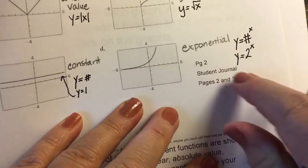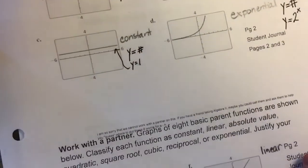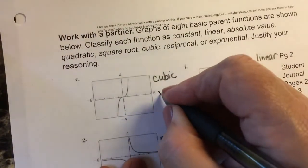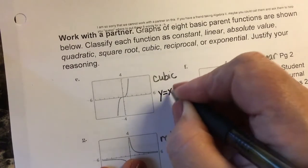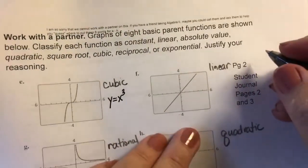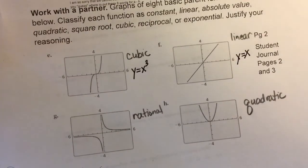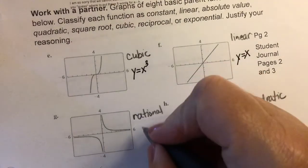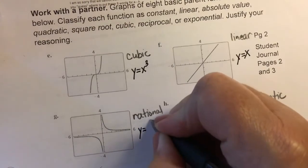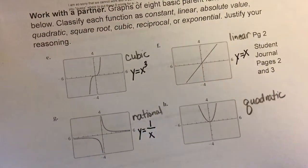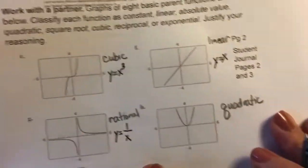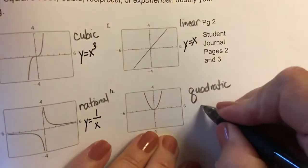Let's look at cubic function: y equals x cubed. A linear function: y equals x. A rational function, I want you to think about rational as being a fraction, so y equals 1 over x. That's a rational function. And then the last one is quadratic, and that's y equals x squared.